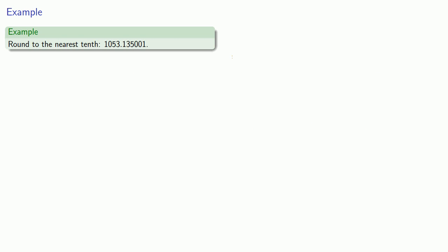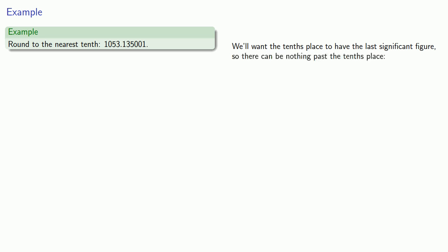Let's try another example. We want to round the number 1053.135001 to the nearest tenth. We'll want our tenths place to have the last significant figure. Because that's past the decimal point, anything written after that place becomes significant, so there must be nothing past the tenths place. One possibility is 1053.1, where we drop all digits after the 1 in the tenths place.